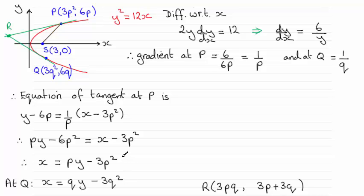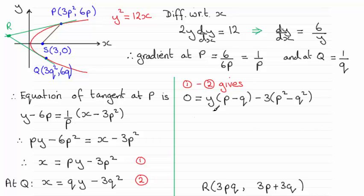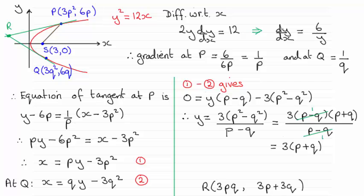Now we can just use simultaneous equations to find out R. So if I number those two equations 1 and 2, then I would think we could eliminate the X's here by doing equation 1 minus equation 2. So if you do 1 minus 2, you'll end up with this result here, which we can rearrange to make Y the subject. So if you rearrange that, you end up with Y equaling 3 lots of P plus Q. You'll notice that P squared minus Q squared, difference of two squares means that the P minus Q cancels.